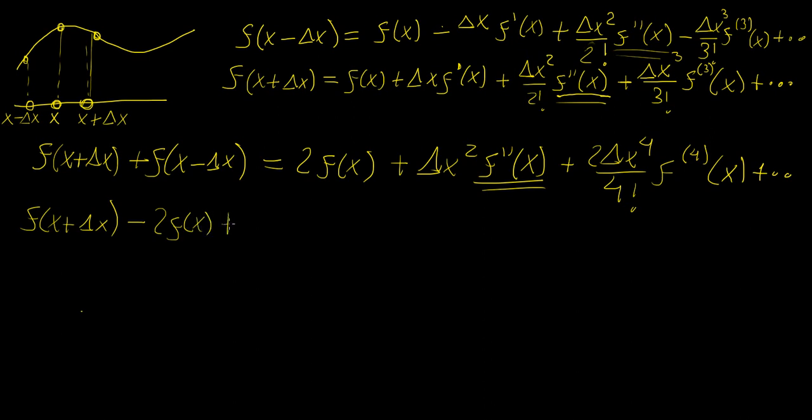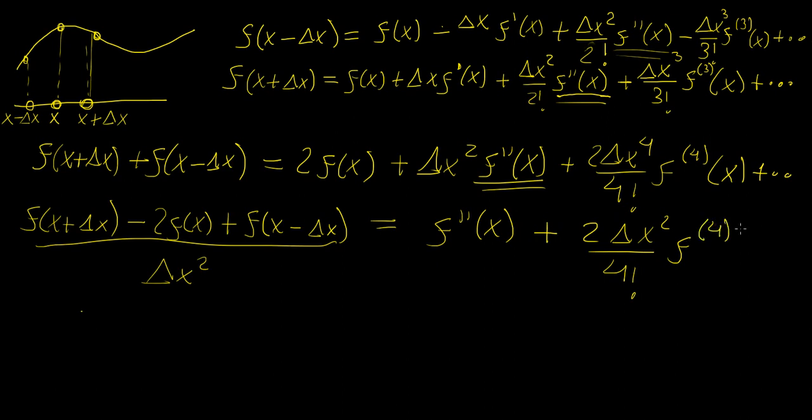f of x plus f of x minus delta x equals to what? Well, let's divide both sides by delta x squared, so let's have delta x squared on this side. So this is f double prime x. Now we divide it by delta x squared, so this becomes 2 delta x squared over 4 factorial times f of fourth derivative of x plus all that, and then we know that if we perform a truncation about this term, this is going to become a term of magnitude delta x squared, because this is the leading term in this sequence.